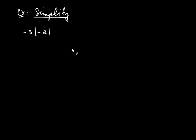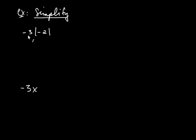So let's say you were asked to simplify negative 3 multiplied by the absolute value of negative 2. First of all, this is multiplication — it's kind of like having negative 3 multiplied by x. Nobody writes a dot here; it's assumed to be multiplication. You have to know that that's negative 3 times the absolute value of negative 2. The question is, what do you do first? Because this is an issue of order of operations.